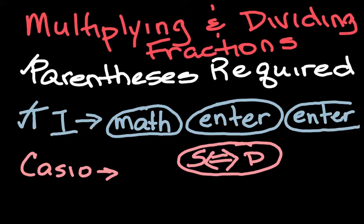Second little ditty over here is how to turn a decimal into a fraction on a Texas Instruments calculator. That is math, enter, enter. So if you have a Texas Instruments calculator, go ahead and write that down. Our third one on there is for a Casio calculator, which is S double arrow D. If you have a calculator other than those two, leave me a comment below and I'll let you know how to take care of it.